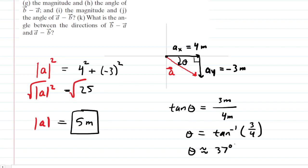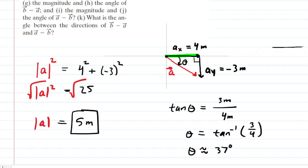We want to report that angle very explicitly — it's not just 37 degrees. Looking carefully, it is 37 degrees measured in a clockwise direction from the positive x-axis. If your positive x-axis points right and you go clockwise, you're going downward. So it's important to say 37 degrees clockwise from the positive x-axis. This is the correct answer to Part B.